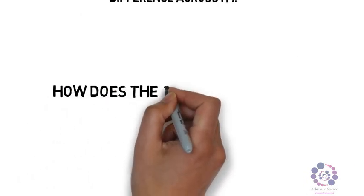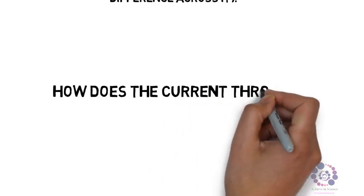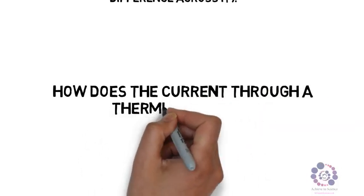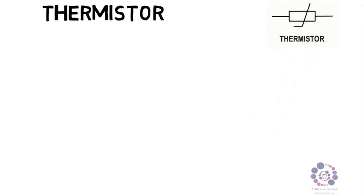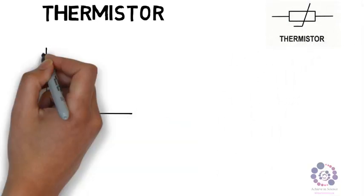How then does the current through a thermistor vary? As the name suggests, thermistors respond to temperature. Therm means heat. The symbol is shown on the screen.